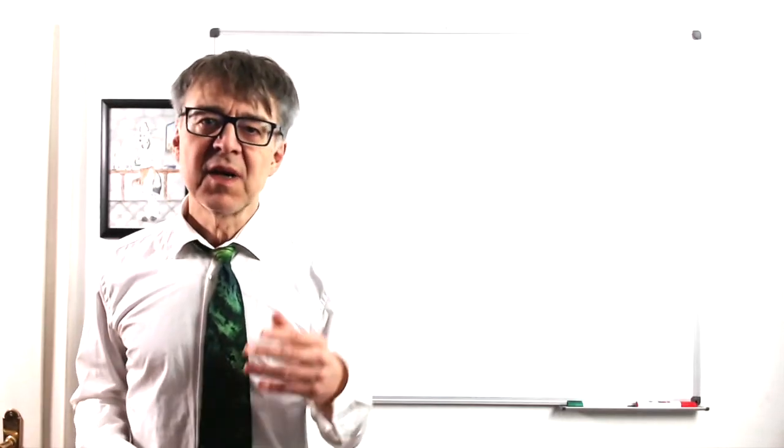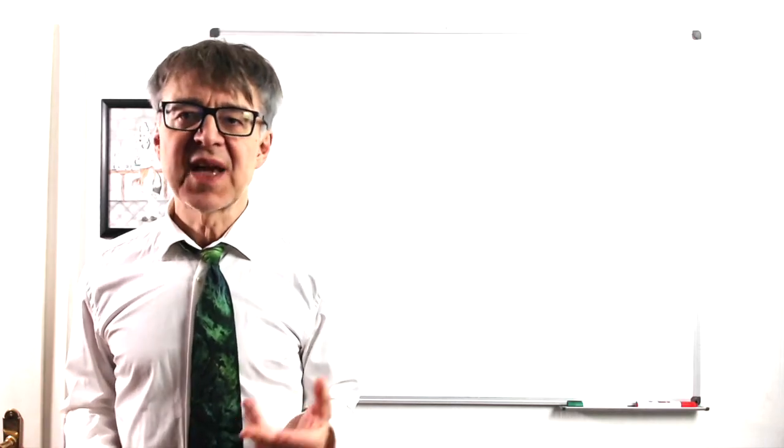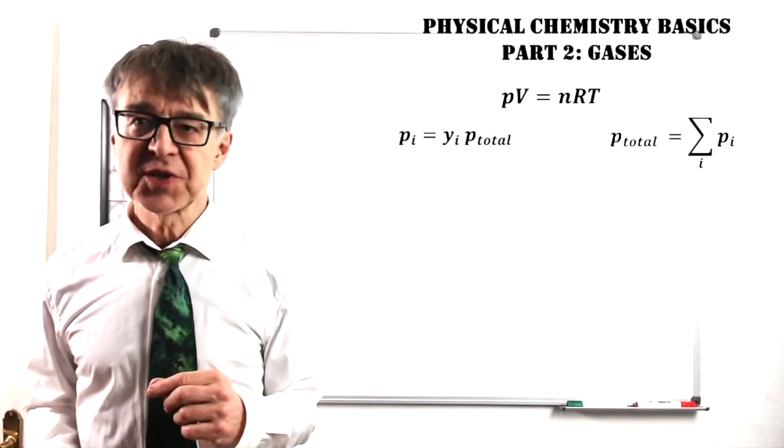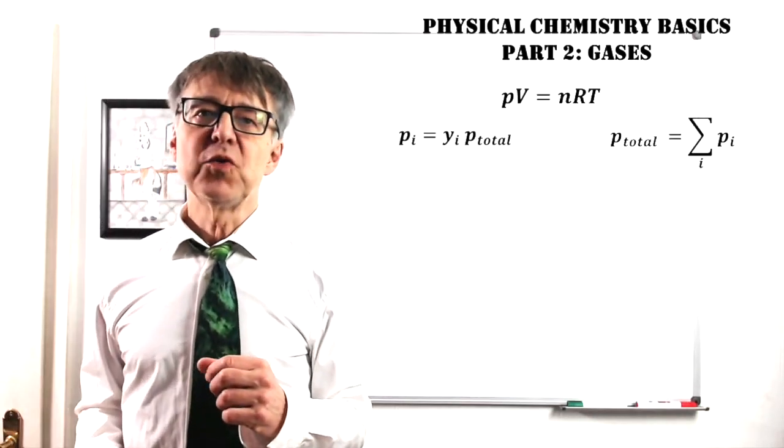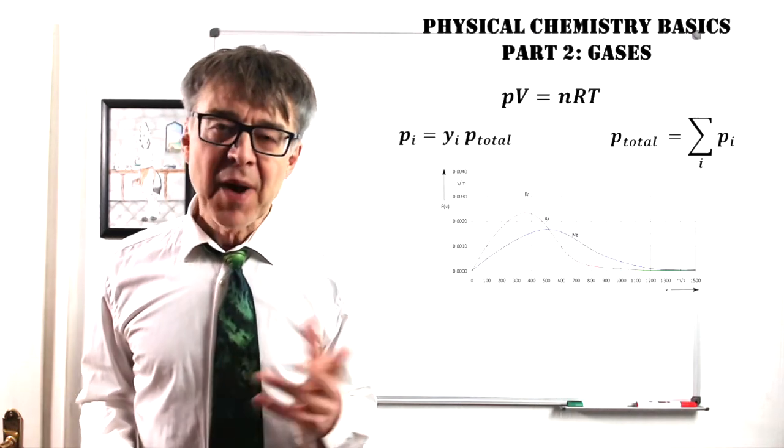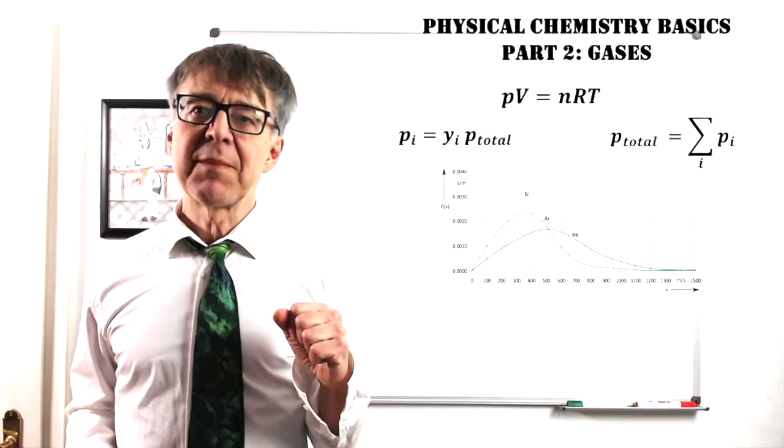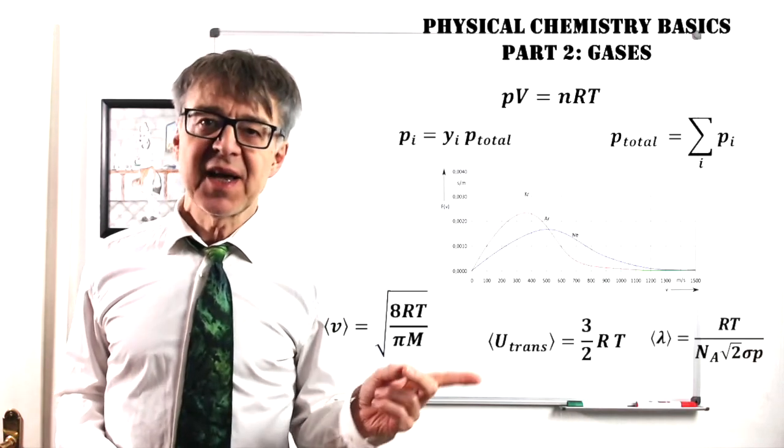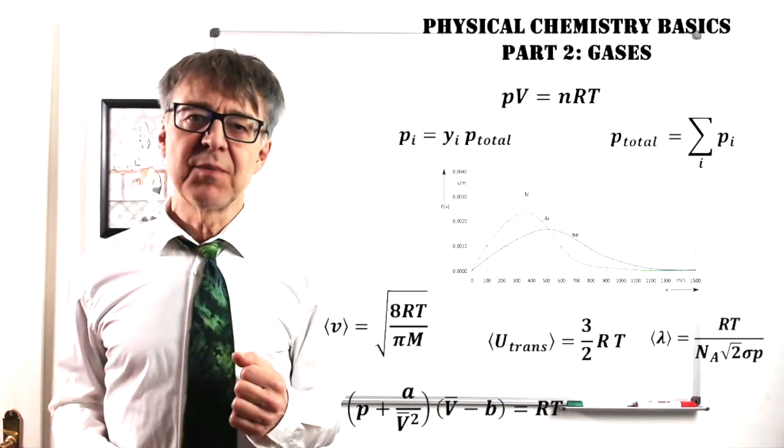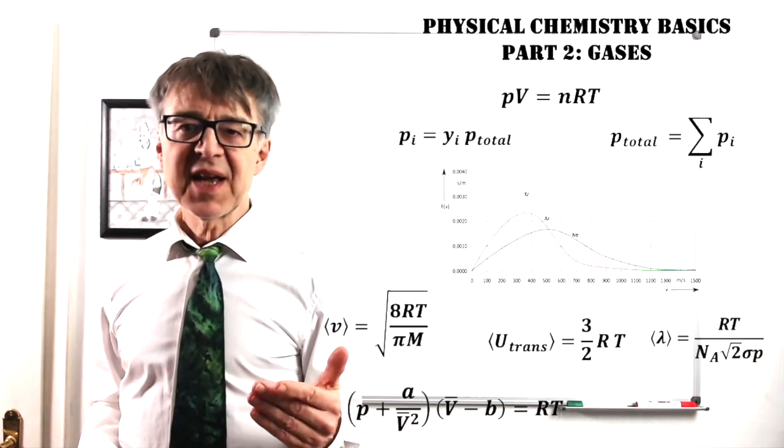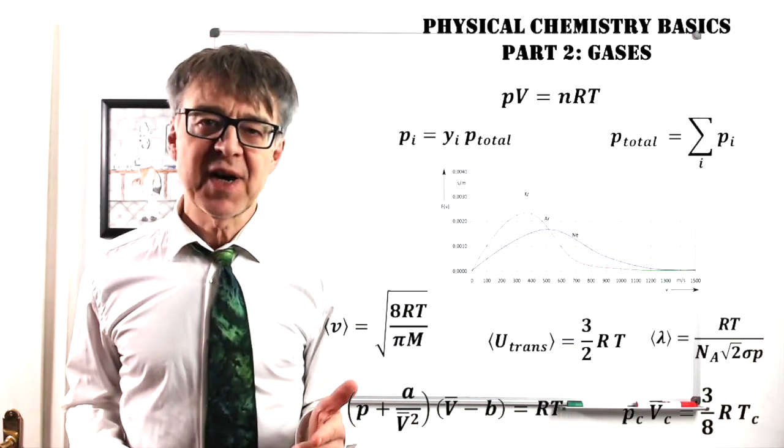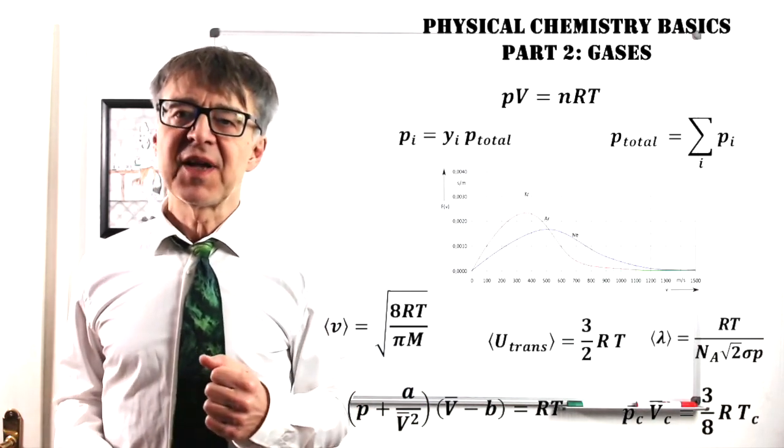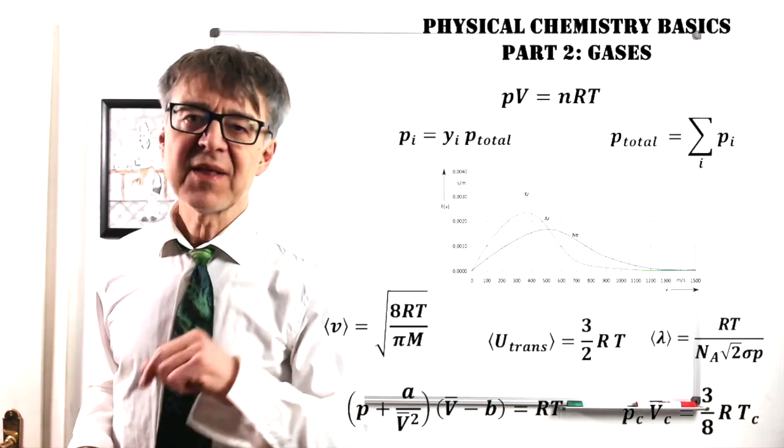Let's summarize. The state of an ideal gas can be calculated using the ideal gas law. The composition of gas mixtures can be given using Dalton's partial pressures. Microscopically, a gas can be described by Maxwell-Boltzmann theory with the parameters average speed and mean-free path being most important. Deviations from the ideal gas behavior can be quantified using the Van der Waals equation, which explains that at the critical point, a gas is only three-eighths ideal.